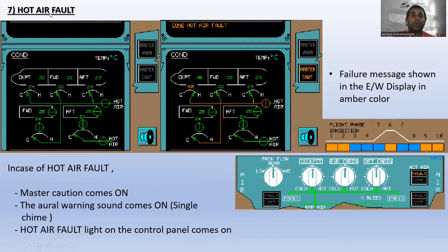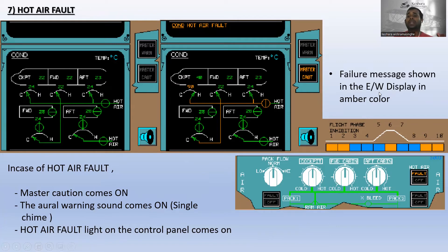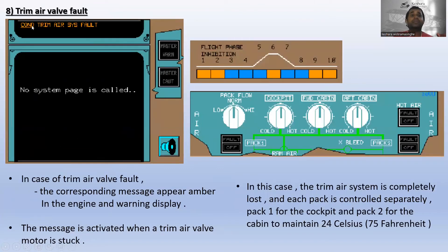In case of hot air fault, master caution comes on, oral warning sounds as a single chime, and the hot air fault light on the control panel comes on in amber. The failure message is shown in amber on the engine warning display, and on the conditioning page the hot air valve also shows in amber. This happens in flight phases one, two, six, nine, and ten.